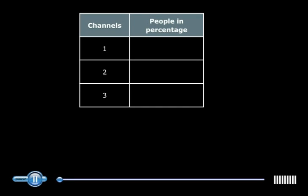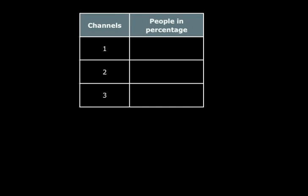You see this table? Quite obviously it represents some data. There are three channels and there was a study which was done which gave the percentage of people who preferred a particular channel. So channel number 1 was preferred by 30% of the people, 2 by 25% of the people and 3 by 45% of the people.